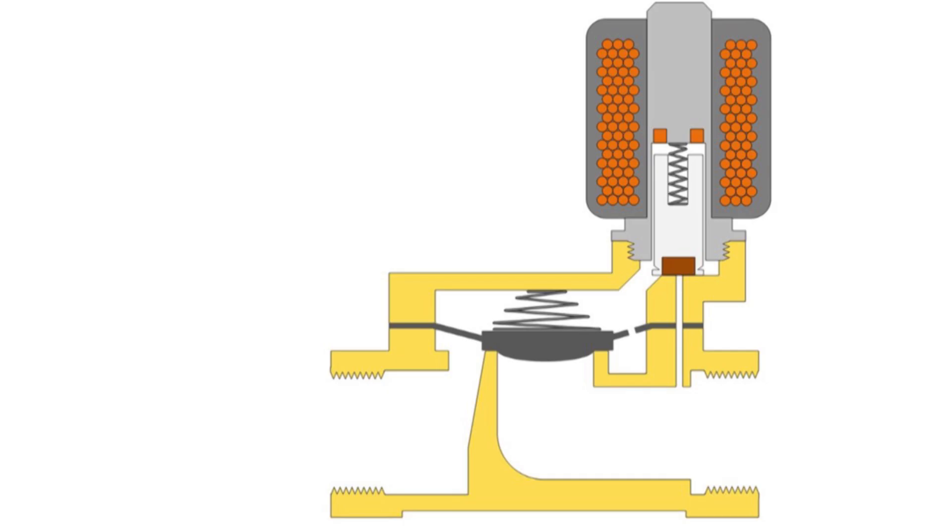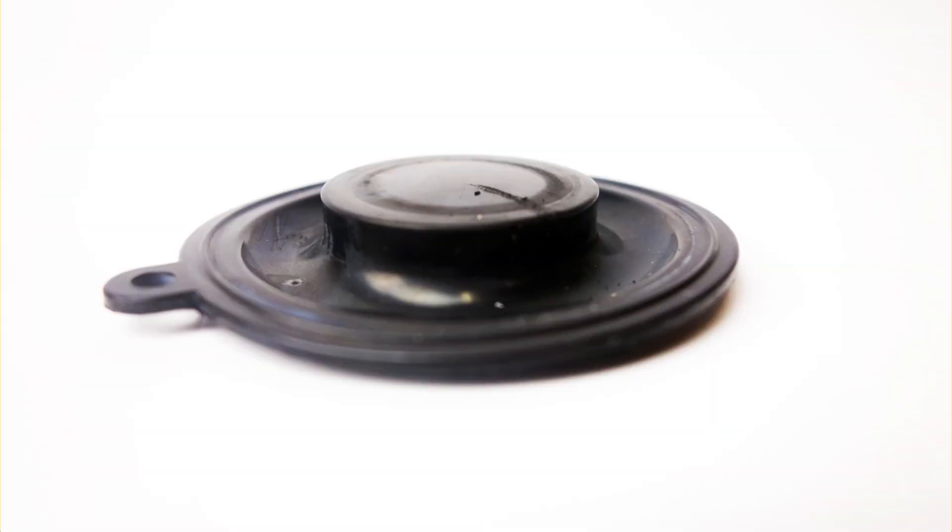If the valve doesn't shut off or leaks, inspect and replace damaged or worn membranes, seals, and o-rings. Even a very small leakage can cause the valve to malfunction.